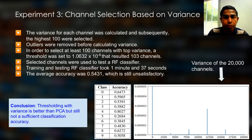When these selected channels were used to train and test a random forest classifier, the average accuracy we received was 0.54, which is still unsatisfactory. This means variance thresholding is much better than PCA, principal component analysis, but still not the accuracy to be useful.